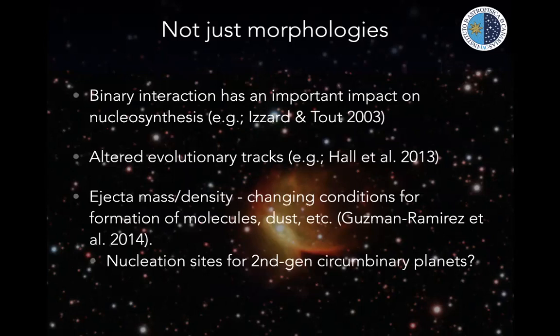There is a misconception that binarity is only relevant to explaining morphologies. In fact, binarity has very important impacts on nucleosynthesis — it can cut short stellar nucleosynthesis, alter evolutionary tracks, and by changing the ejected mass or density and shape, impact the formation of molecules and dust, perhaps even providing nucleation sites for second-generation circumbinary planets.